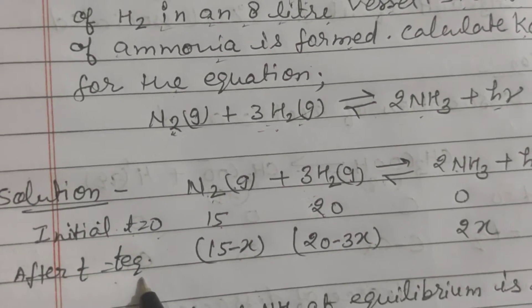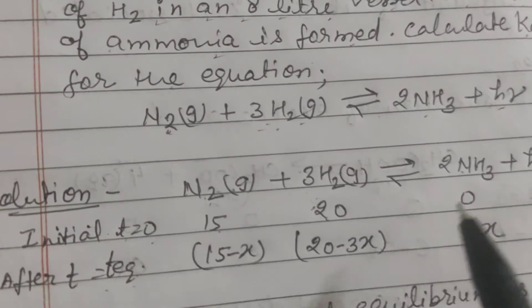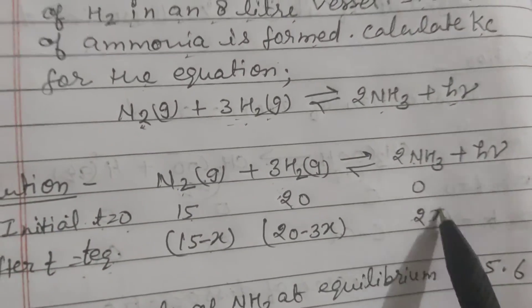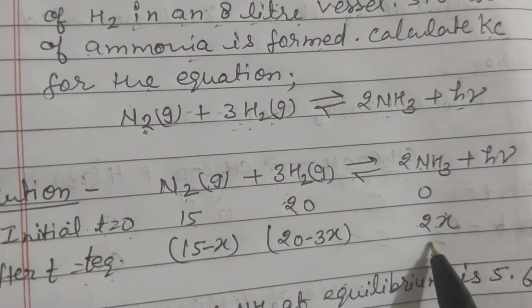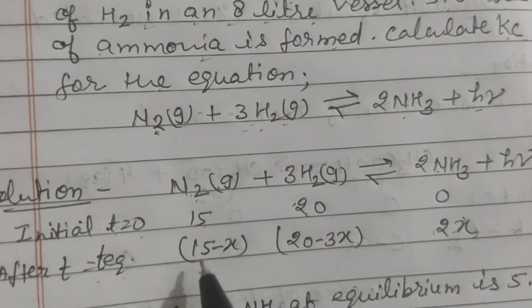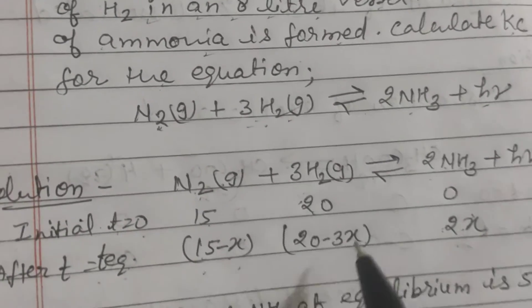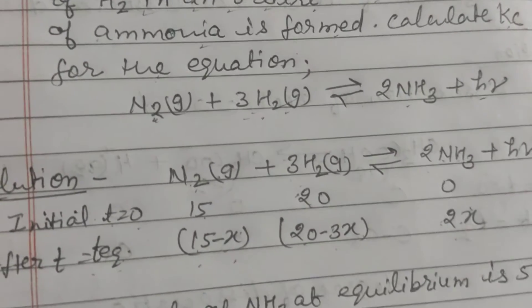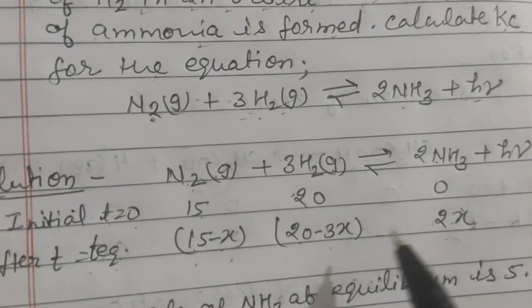After T time, means at equilibrium, there is change in concentration of 2X because here 2 moles of ammonia is formed. So 2X, then we have to write 15 minus X and 20 minus 3X.